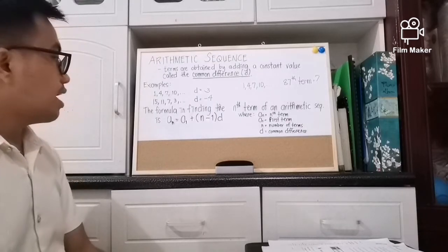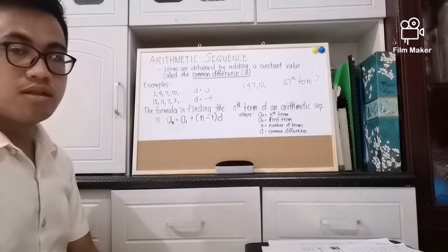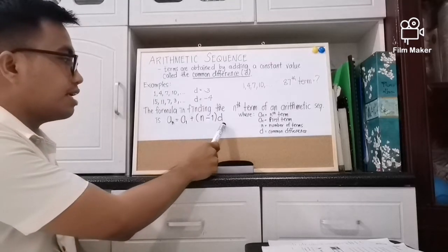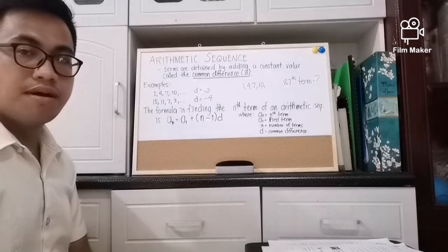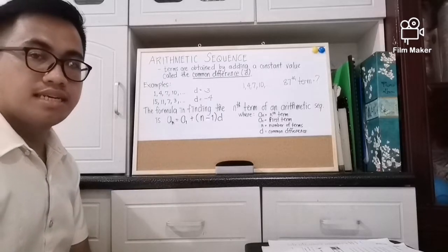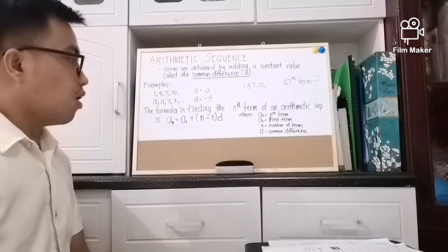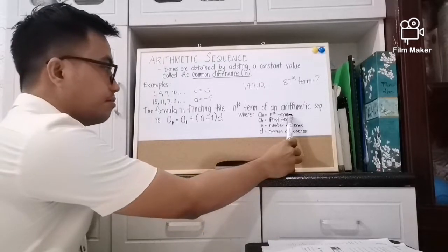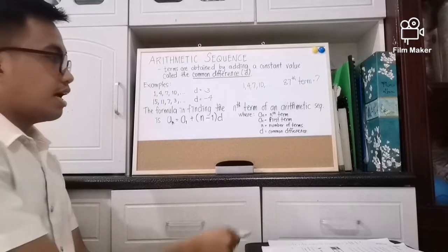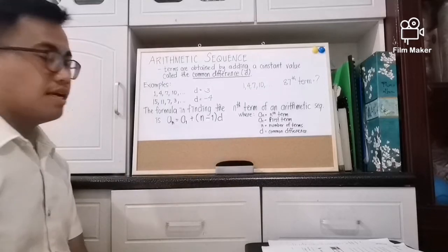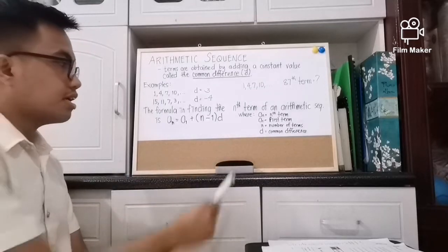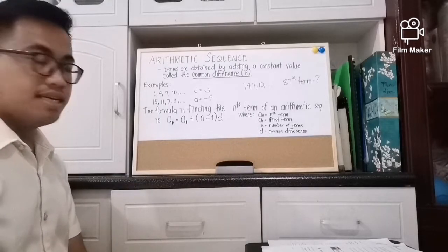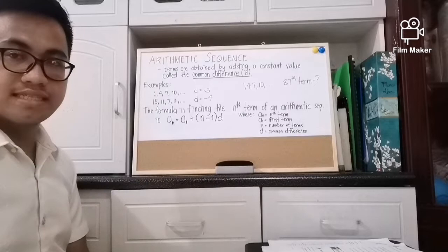The formula is: a sub n equals a sub 1 plus the quantity n minus 1 times d. Where a sub n is the nth term, a sub 1 is the first term, n is the number of terms, and d is the common difference.